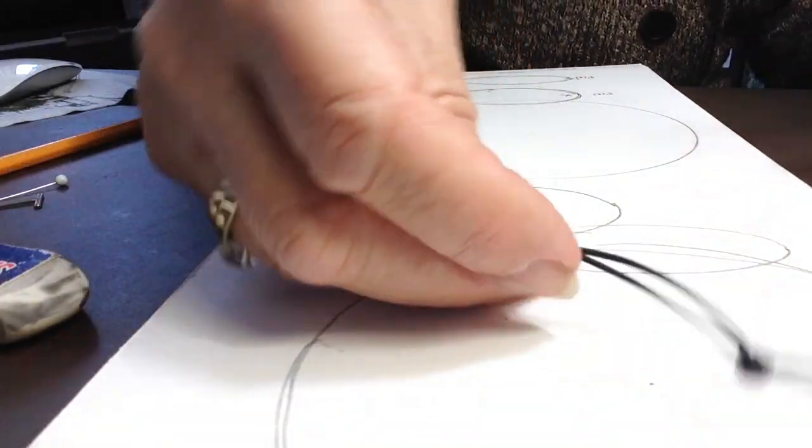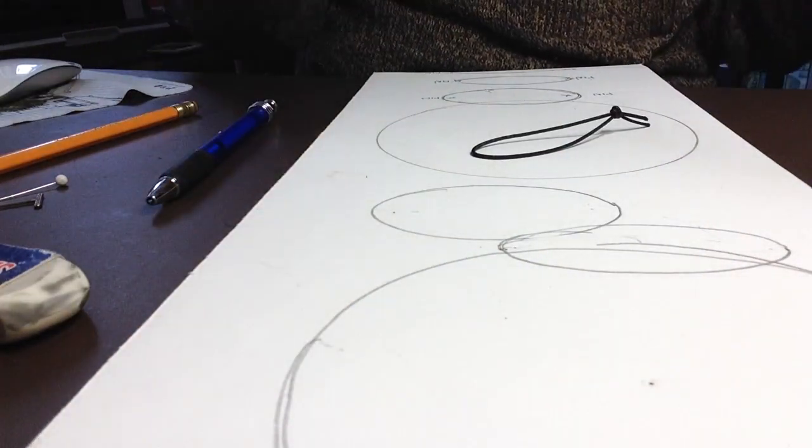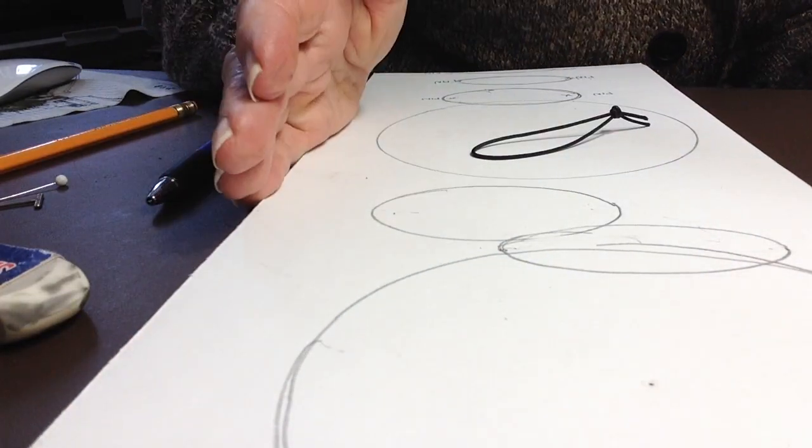So if you want a smaller circle, you just make a smaller piece of string, and you get a full circle. So that's a really easy way to make an ellipse.